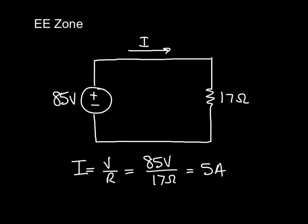We go ahead and redraw the circuit showing the source and the total resistance. Now we can solve for the total current. The formula for total current here is given as I equals V over R. So we just plug the numbers in: 85 volts over 17 ohms gives us 5 amps.